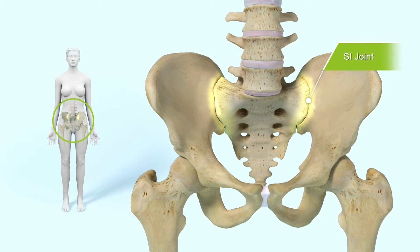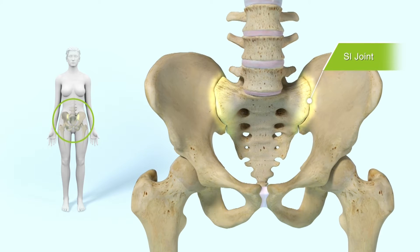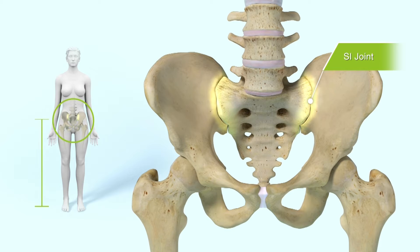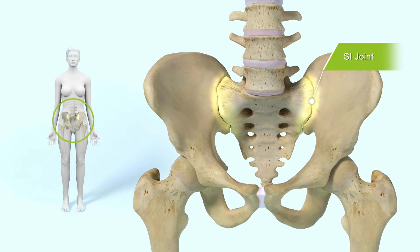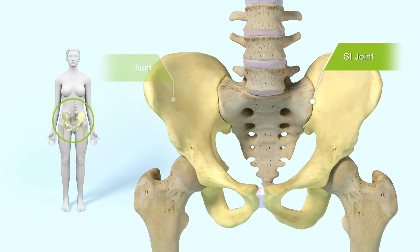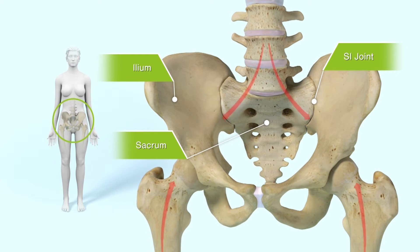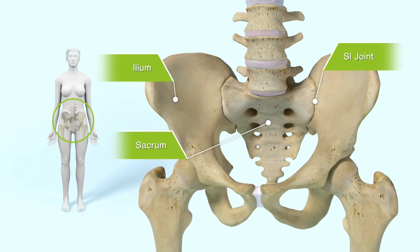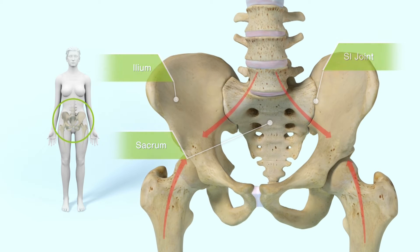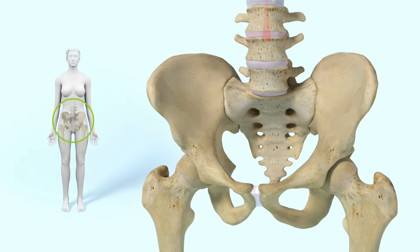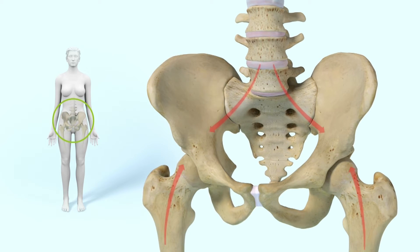The sacroiliac joints, or SI joints, are the intersection between the upper and lower body. The right and left SI joints connect the two iliac bones to the sacrum within the pelvis and provide shock absorption and force transfer during walking and other movements. A functionally stable SI joint allows smooth, energy-efficient load transfer.